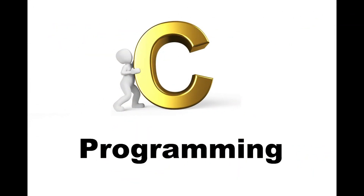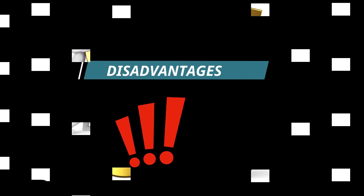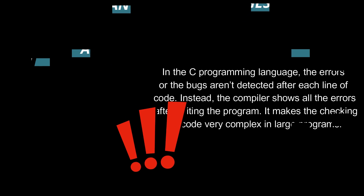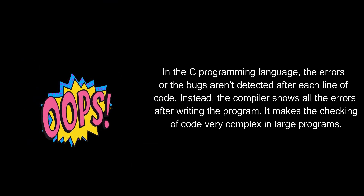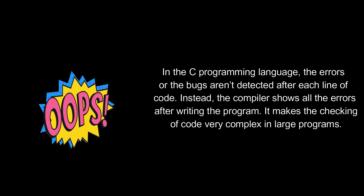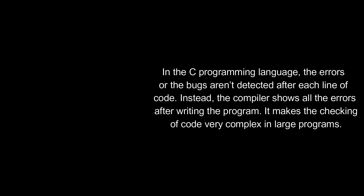We know those are the features of C programming, but there are some disadvantages too. In C programming, errors or bugs aren't detected after each line of code. Instead, the compiler shows all the errors after writing the entire program. This makes checking code very complex in large programs.